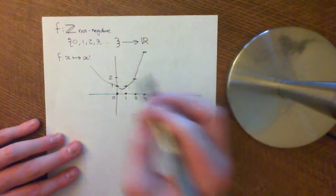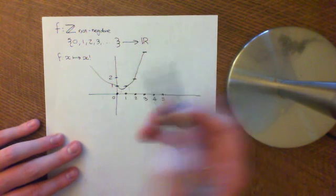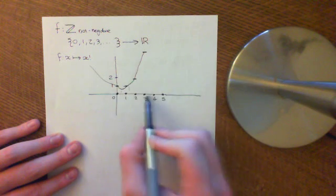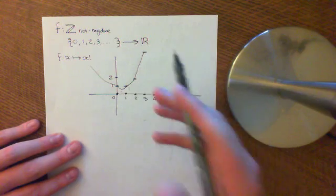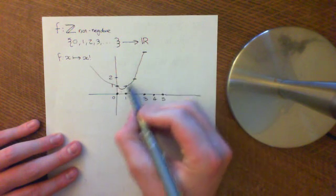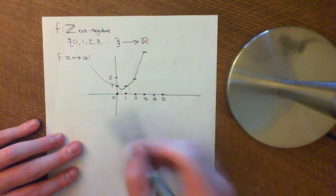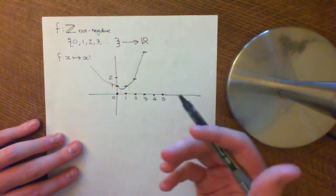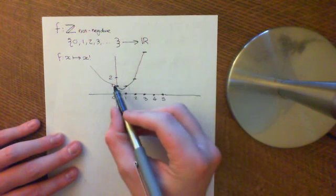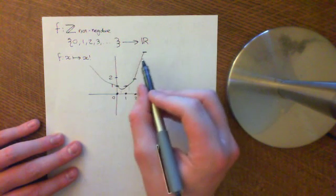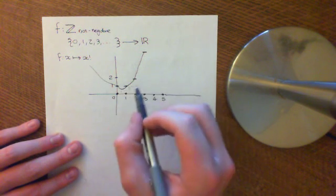Of course you can — you can build a function that goes through those points. There are methods in numerical analysis where you can build functions that are going to go through these points: the Newton series, for instance, Bernstein polynomials. There are absolutely loads of ways you can build functions to go through them. It's going to have to go through an infinite number of points, so you're going to have sequences of functions which converge on going through all the points.